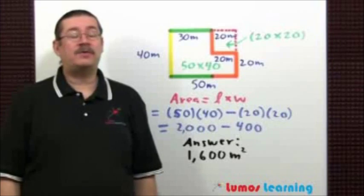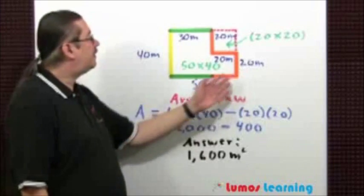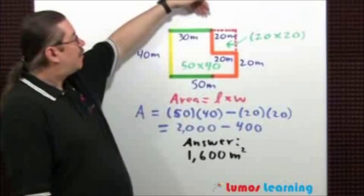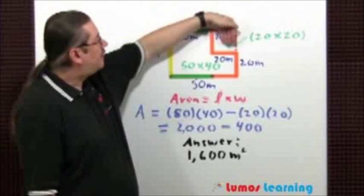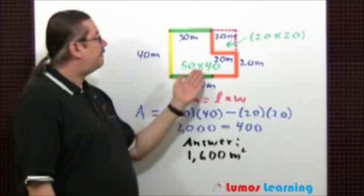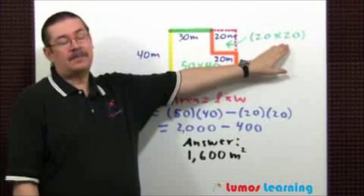A second way to compute the area is to create one very large rectangle and then subtract the part that's not really part of the original figure right here. The larger rectangle has dimensions 50 by 40. The smaller is 20 by 20.